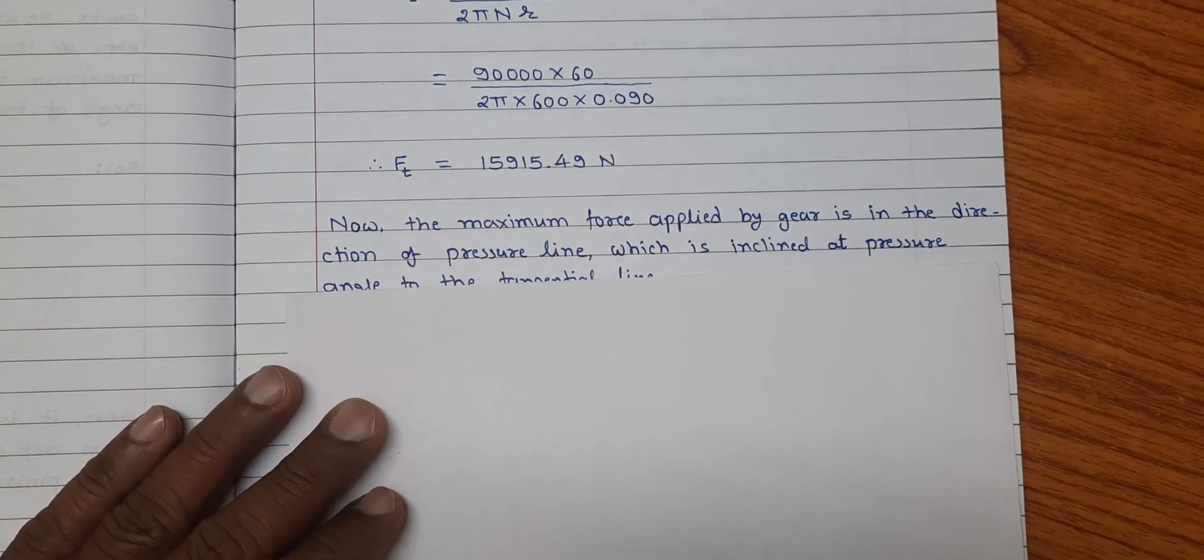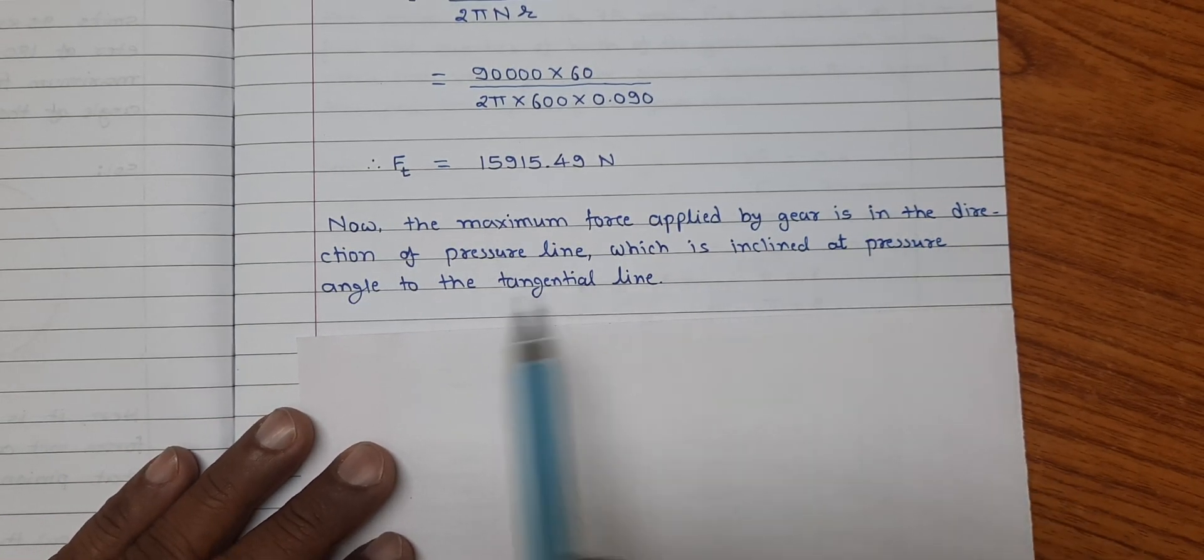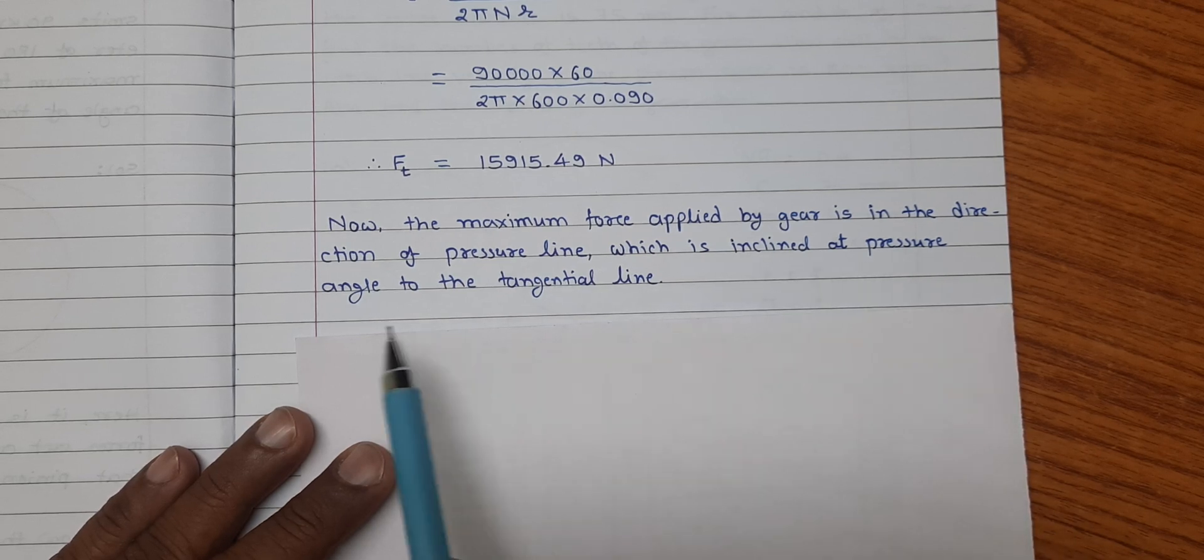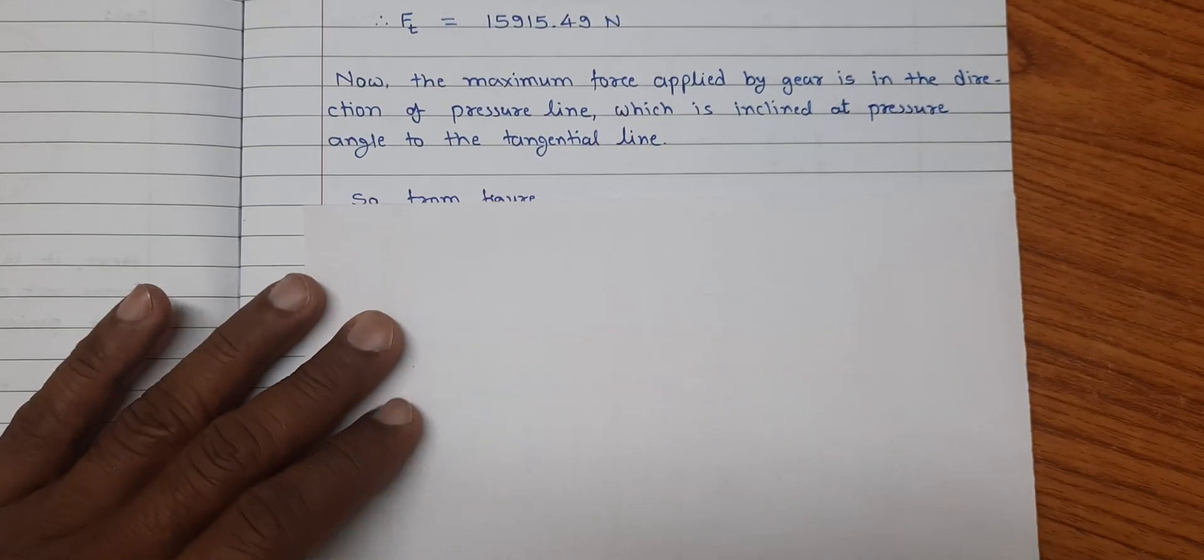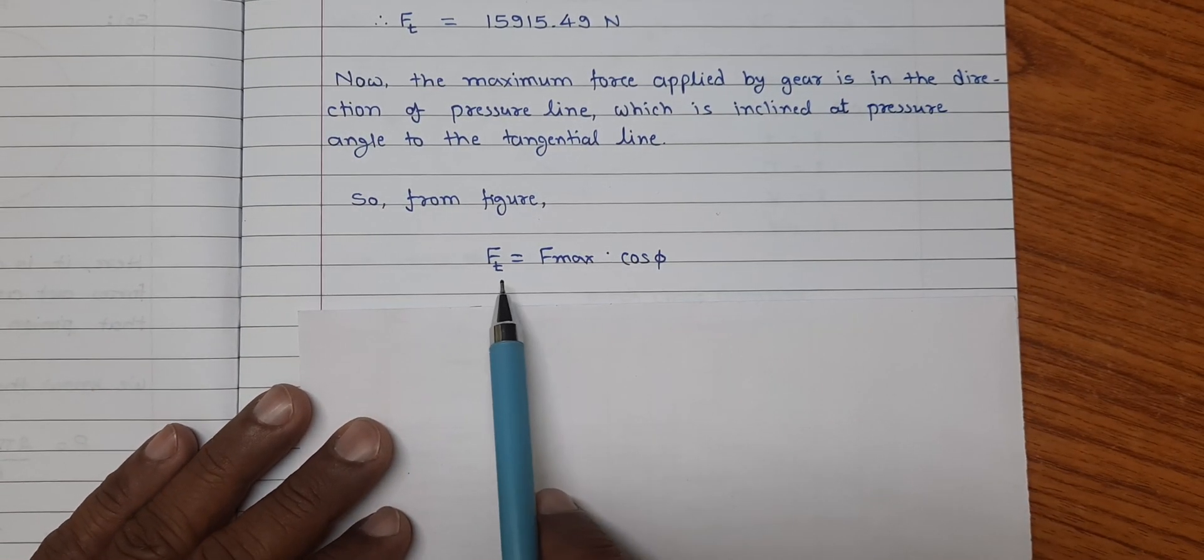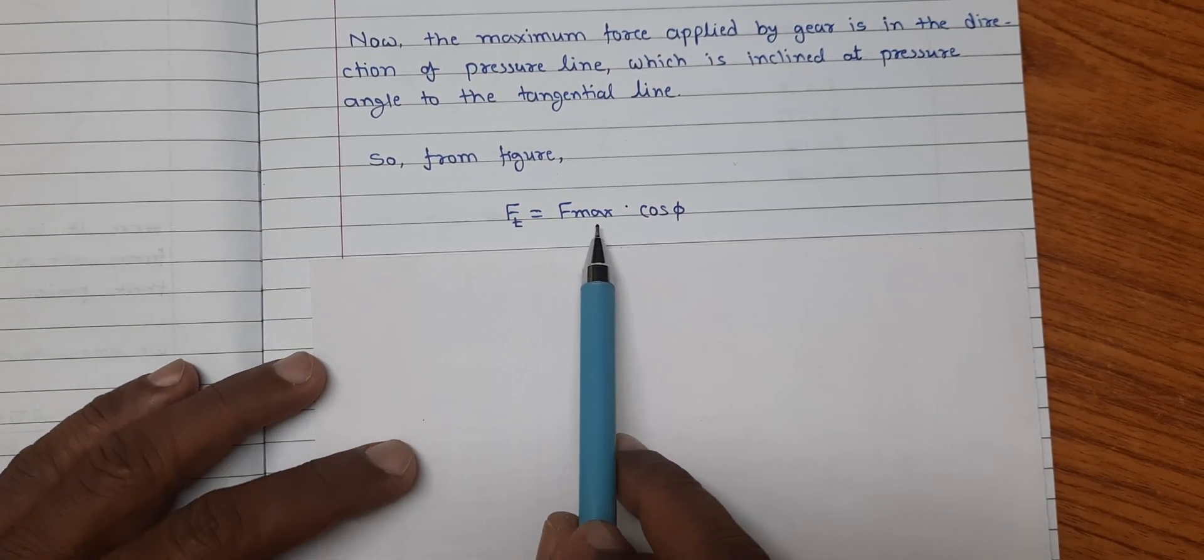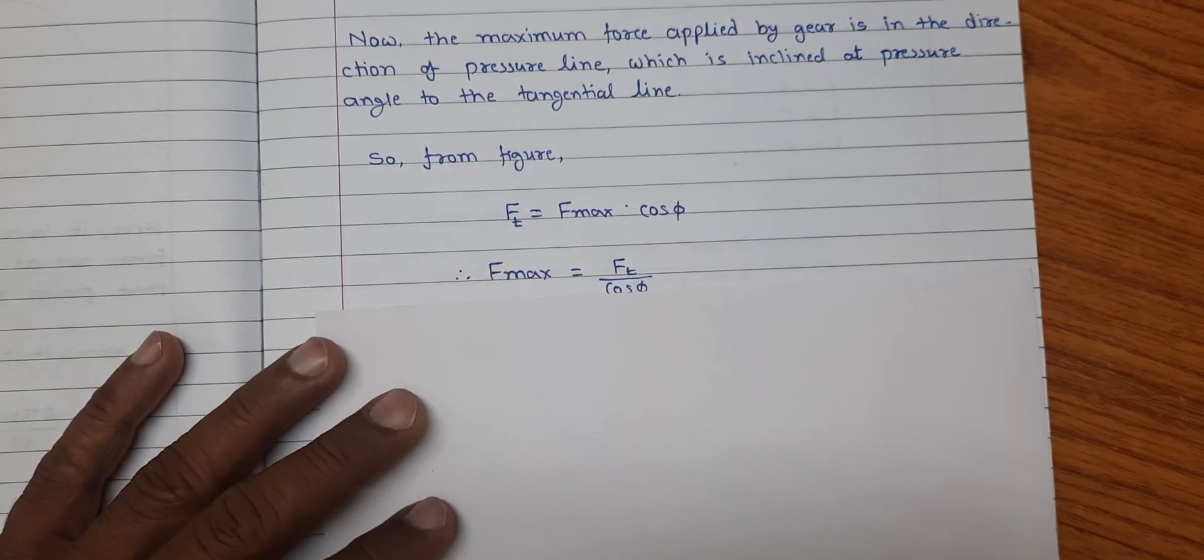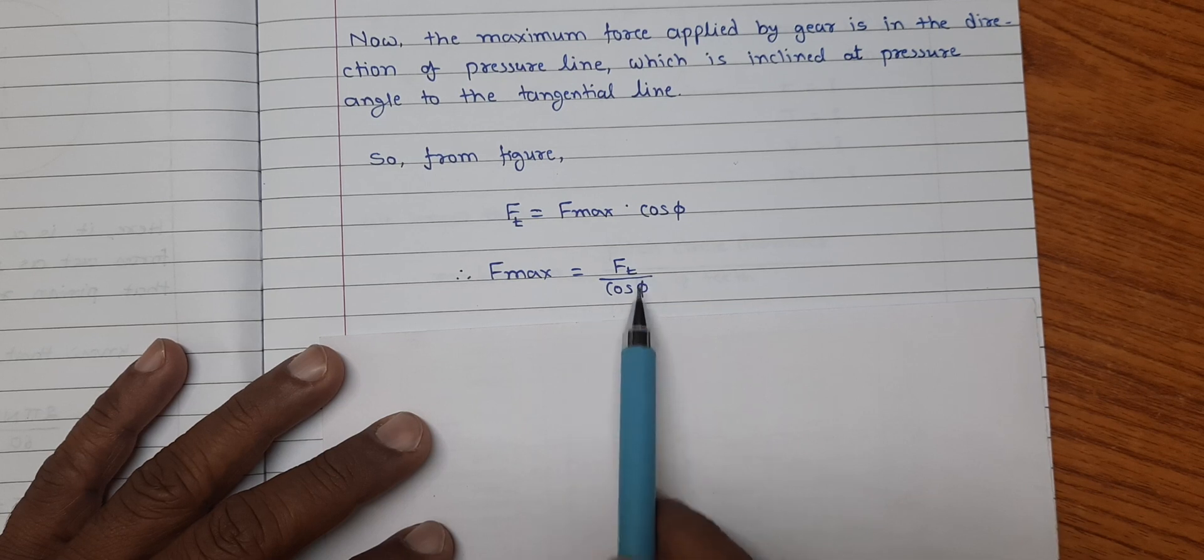Now the maximum force applied by the gear is in the direction of pressure line which is inclined at pressure angle to the tangential line. So from figure we can write that tangential force ft is equal to maximum force f max into cos φ. So f max is equal to ft upon cos φ.